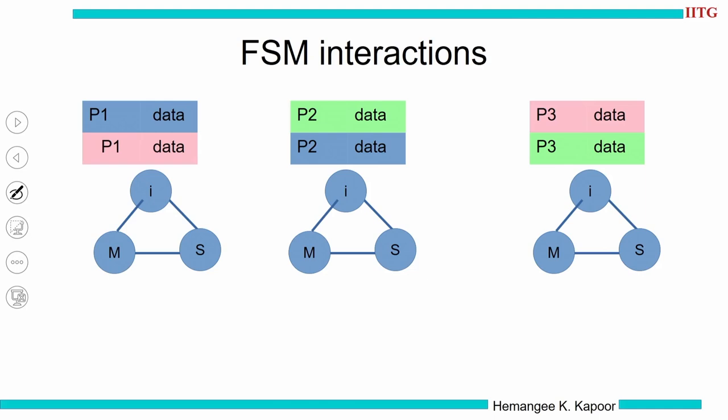Let us do the FSM interactions with a sample example. We have three processors P1, P2, P3 — the blue represents the cache block. P1 has the block, so it is not invalid; it could be in S or M state. P2 also has it, not invalid. Since both P1 and P2 have it, we can infer they are in shared state. P3 does not have this block, so it is in the invalid state.